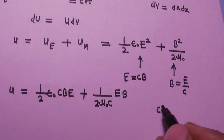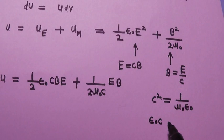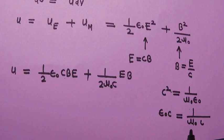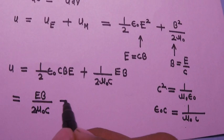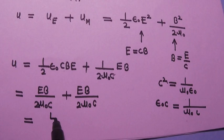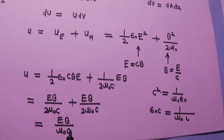We know that c² equals 1/μ₀ε₀, or equivalently ε₀c equals 1/μ₀c. So in place of ε₀c we write 1/μ₀c. The first term then becomes EB/2μ₀c. Similarly the second term is EB/2μ₀c. Adding them gives 2 times EB/2μ₀c, which simplifies to EB/μ₀c.